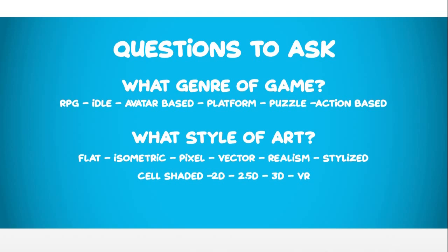The second thing to ask yourself is what style of art you want to create. Whatever is inspiring you to create these characters or games usually has a certain style that you like. You can go online and search all kinds of different styles — pixel art is very specific, isometric art is very specific, stylized 3D, flat. Understanding what style of art you want to produce, whether it's your own style or you're trying to emulate something else, is definitely going to help you set up your characters.